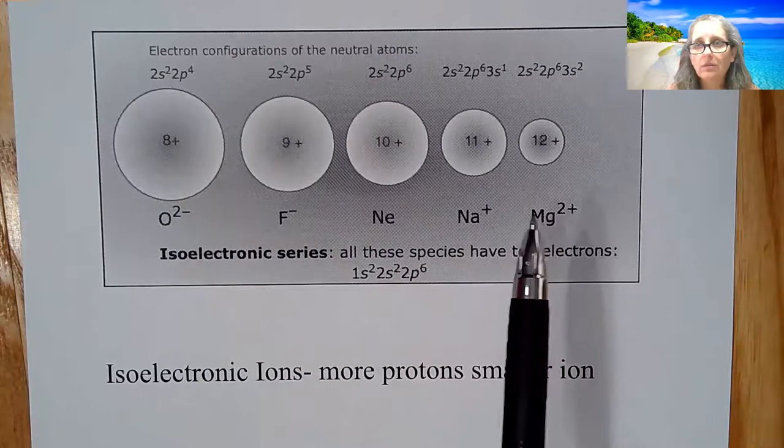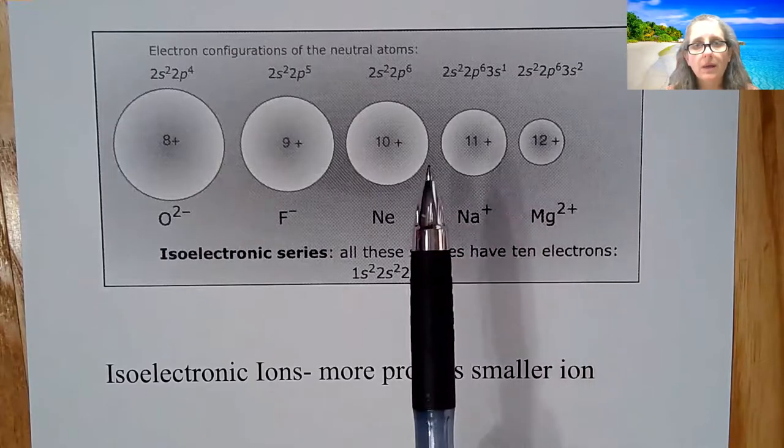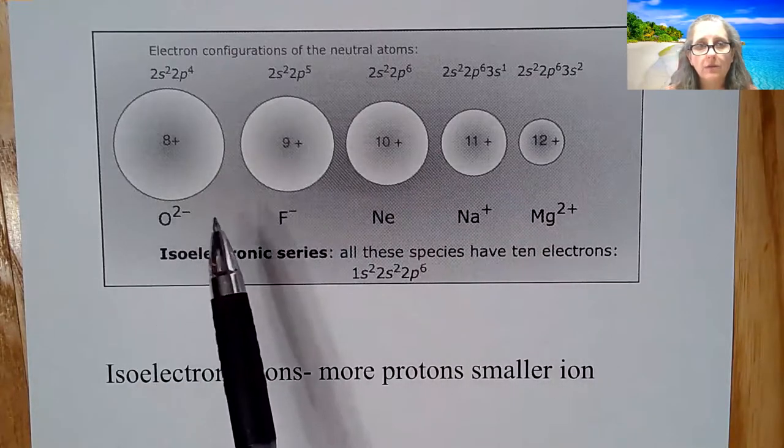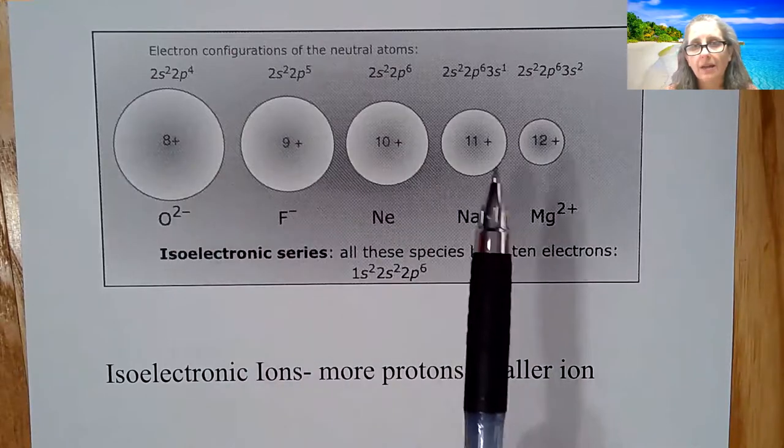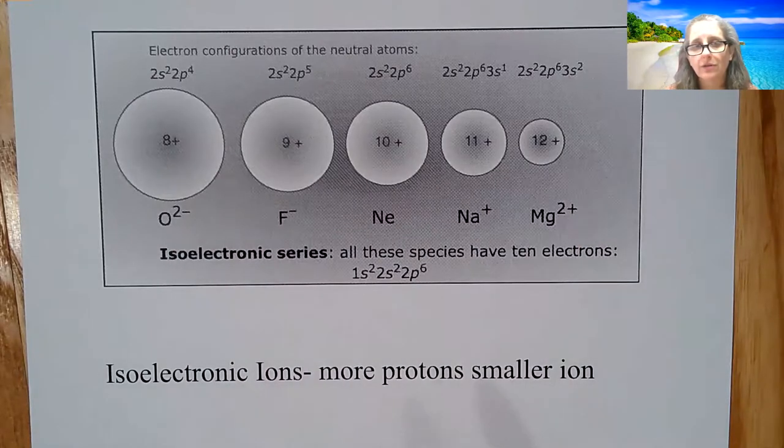So again, electrons are going to determine mostly the size, but depending upon the number of protons. So if you look at oxygen, it has eight protons, nine, 10, 11, and 12 as you go from left to right.